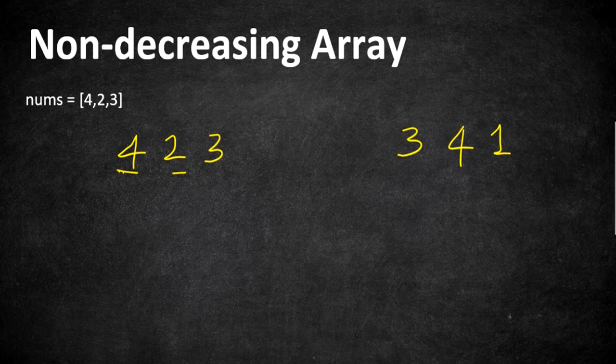So the first intuition for us is to make the first number lesser. Let us make the first number lesser by assigning the same value at the second position. So the number is going to become 2, 2, and 3.